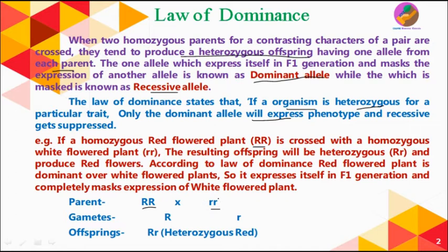The parent with genotype RR is homozygous and has the phenotype of red flowers — a pure line. The parent with genotype rr produces white colored flowers. Both parents are homozygous pure lines. When they are allowed to cross, they produce gametes R and r, and after mating of these two gametes they produce the first generation offspring, which is Rr.